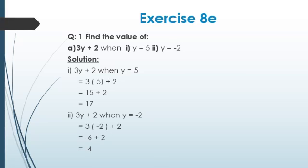Now Part A, Question 1: 3y + 2 when y = −2. We substitute −2 in place of y. So 3 × (−2) = −6, then −6 + 2 = −4. As I explained in the integers unit, when a negative value is larger than the positive value being subtracted, the answer is also negative. So the answer is −4.